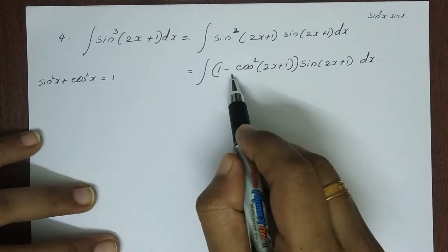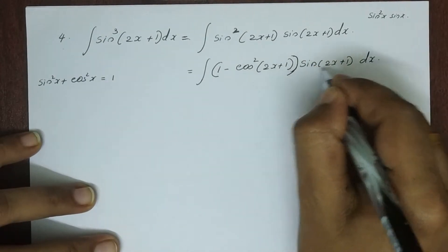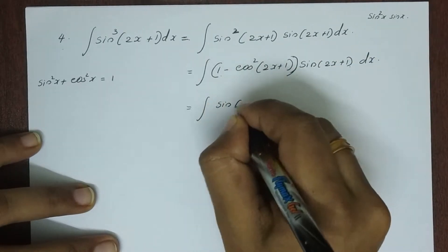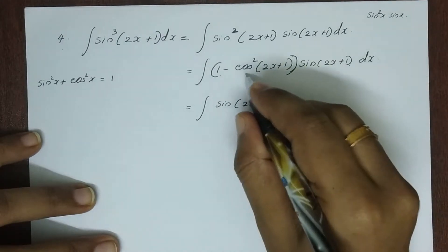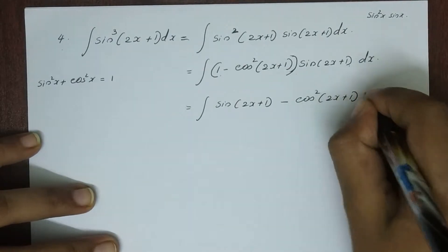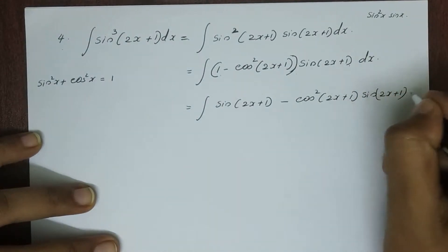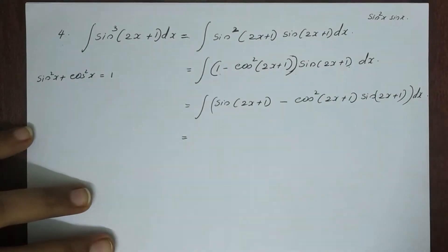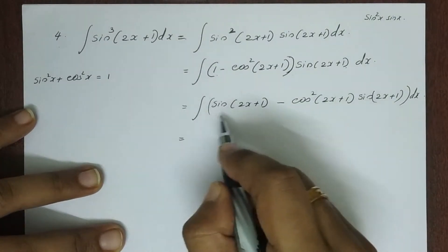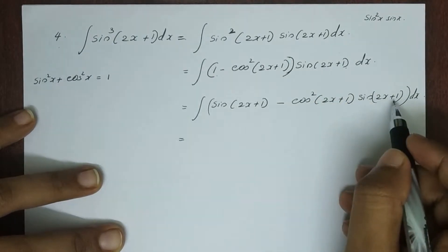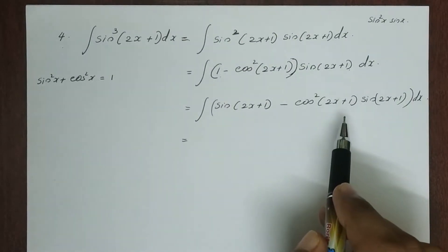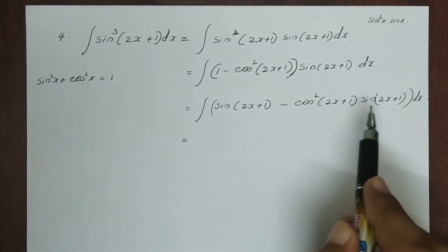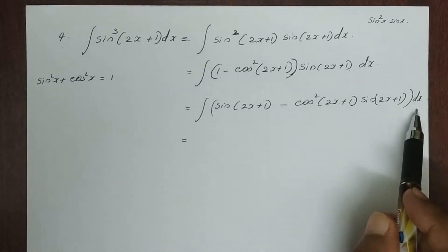So we expand: 1 minus cos²(2x+1) into sin(2x+1) dx. This gives sin(2x+1) dx minus cos²(2x+1) into sin(2x+1) dx. We split it into two separate integrals.